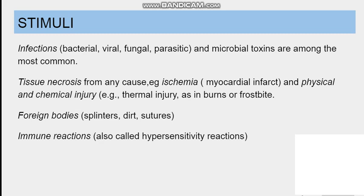Stimuli that trigger acute inflammation include any infections — bacterial, viral, fungal, parasitic — as well as microbial toxins. Tissue necrosis, such as in myocardial infarction or thermal injuries like burns, can also cause acute inflammation. Additional stimuli include foreign bodies and hypersensitivity reactions.